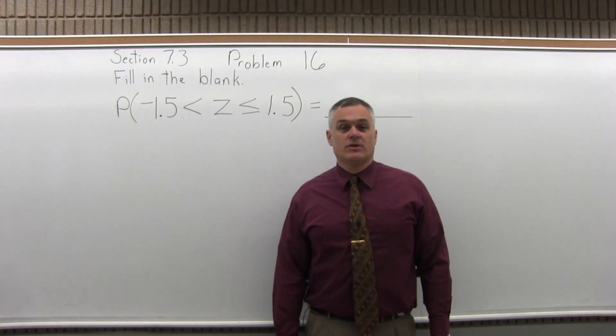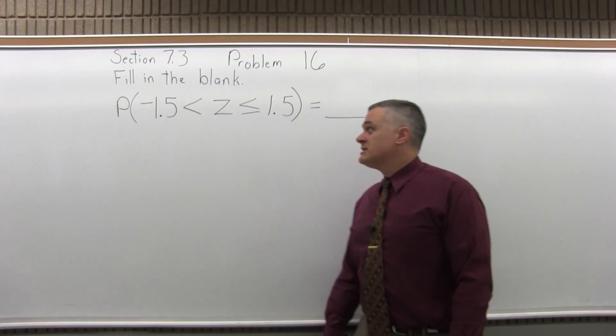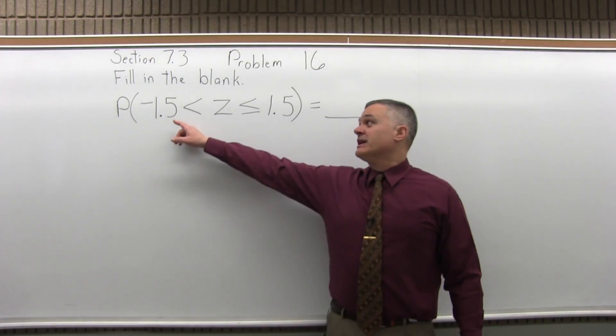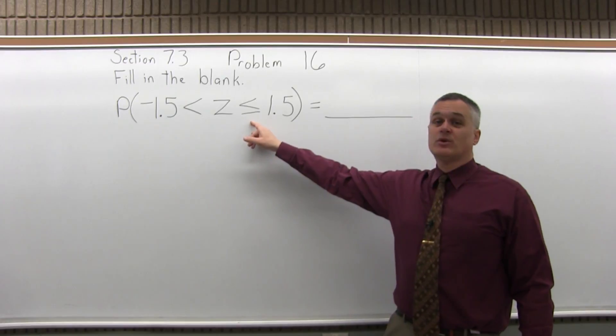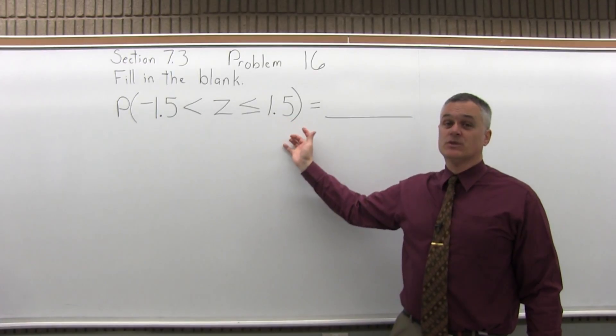This is Section 7.3, Problem number 16. It says, fill in the blank: the probability that negative 1.5 is less than Z is less than or equal to positive 1.5 equals blank.